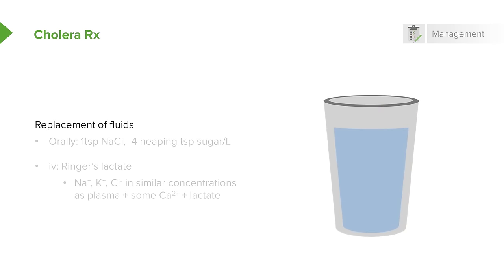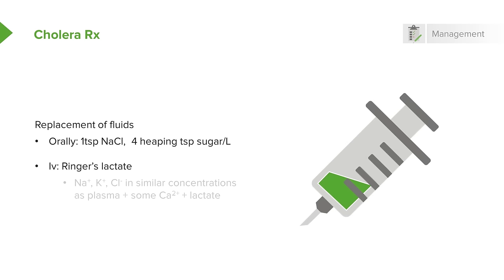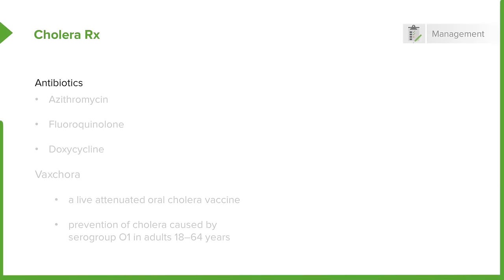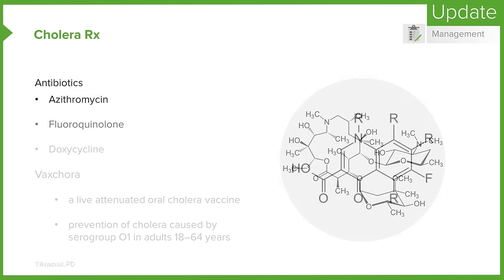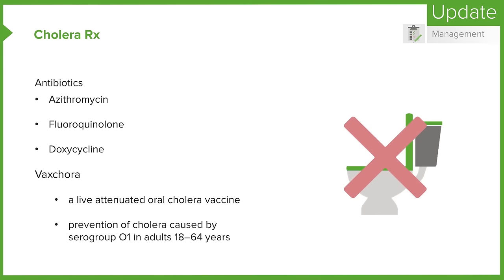We must rapidly replace fluids. For milder versions, we can try oral rehydration with sodium chloride and some sugar. More often they will need IV fluids, and the classic one used is Ringer's lactate, which contains sodium, potassium, and chloride in concentrations similar to plasma, plus calcium and lactate. To kill the bug, we can use azithromycin, a fluoroquinolone, or doxycycline. In June 2016, Vaxchora — a live attenuated oral cholera vaccine — was approved by the FDA for prevention of cholera caused by serogroup O1 in adults 18 through 64 years of age traveling to affected areas.